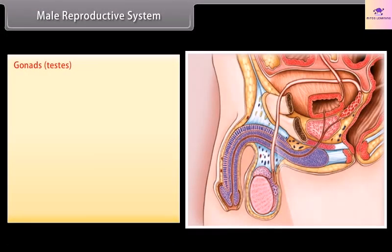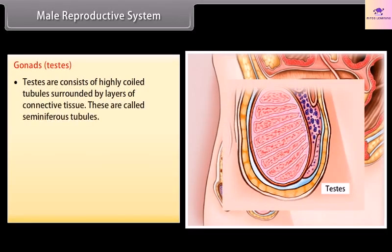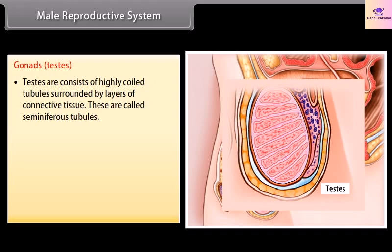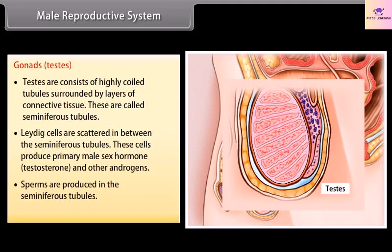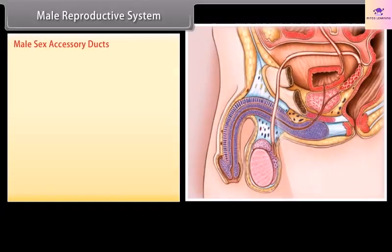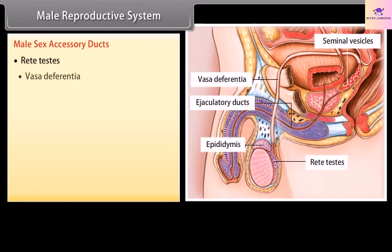The testes consist of highly coiled tubules surrounded by layers of connective tissue, called seminiferous tubules. Leydig cells are scattered in between the seminiferous tubules. These cells produce the primary male sex hormone testosterone and other androgens. Sperms are produced in the seminiferous tubules.